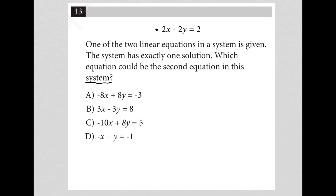I see this equation 2x minus 2y equals 2. I know that I could simplify that by dividing everything by 2. Let's look at what the question is asking us to find. It says one of the two linear equations in a system is given. Okay, so that means this 2x minus 2y is only half of a system of equations. This system has exactly one solution, so that means like one x comma y pair.